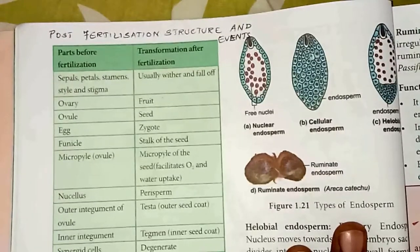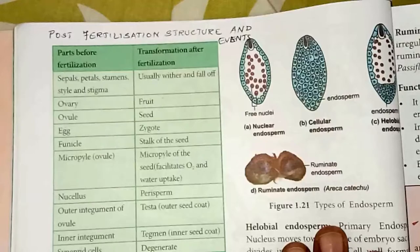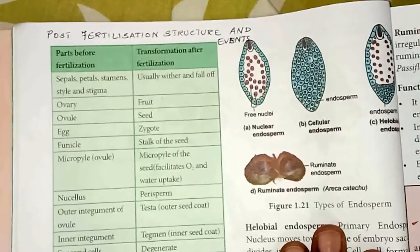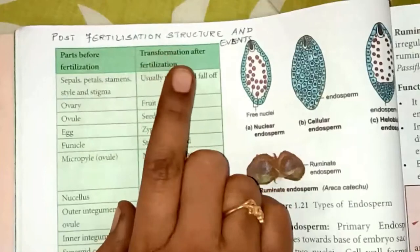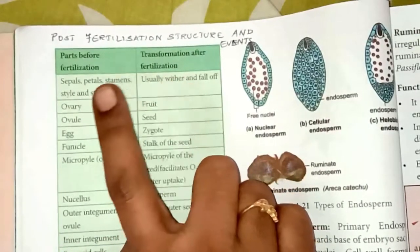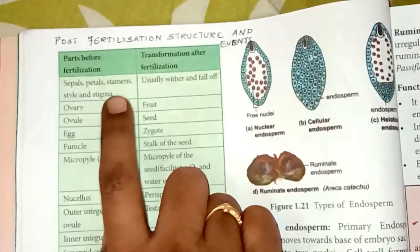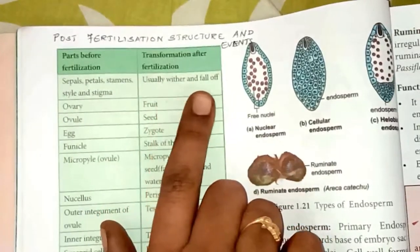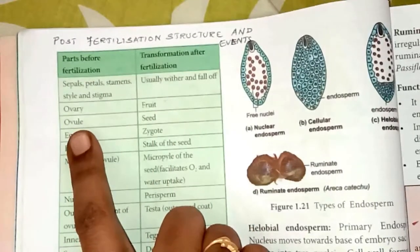Post-fertilization structures and events involve many changes in the floral parts after fertilization up to seed formation. Flowers have sepals, petals, stamens, style, and stigma — all these structures wither and fall off after fertilization. The ovary becomes the fruit after fertilization, and the ovules inside the ovary become the seeds.